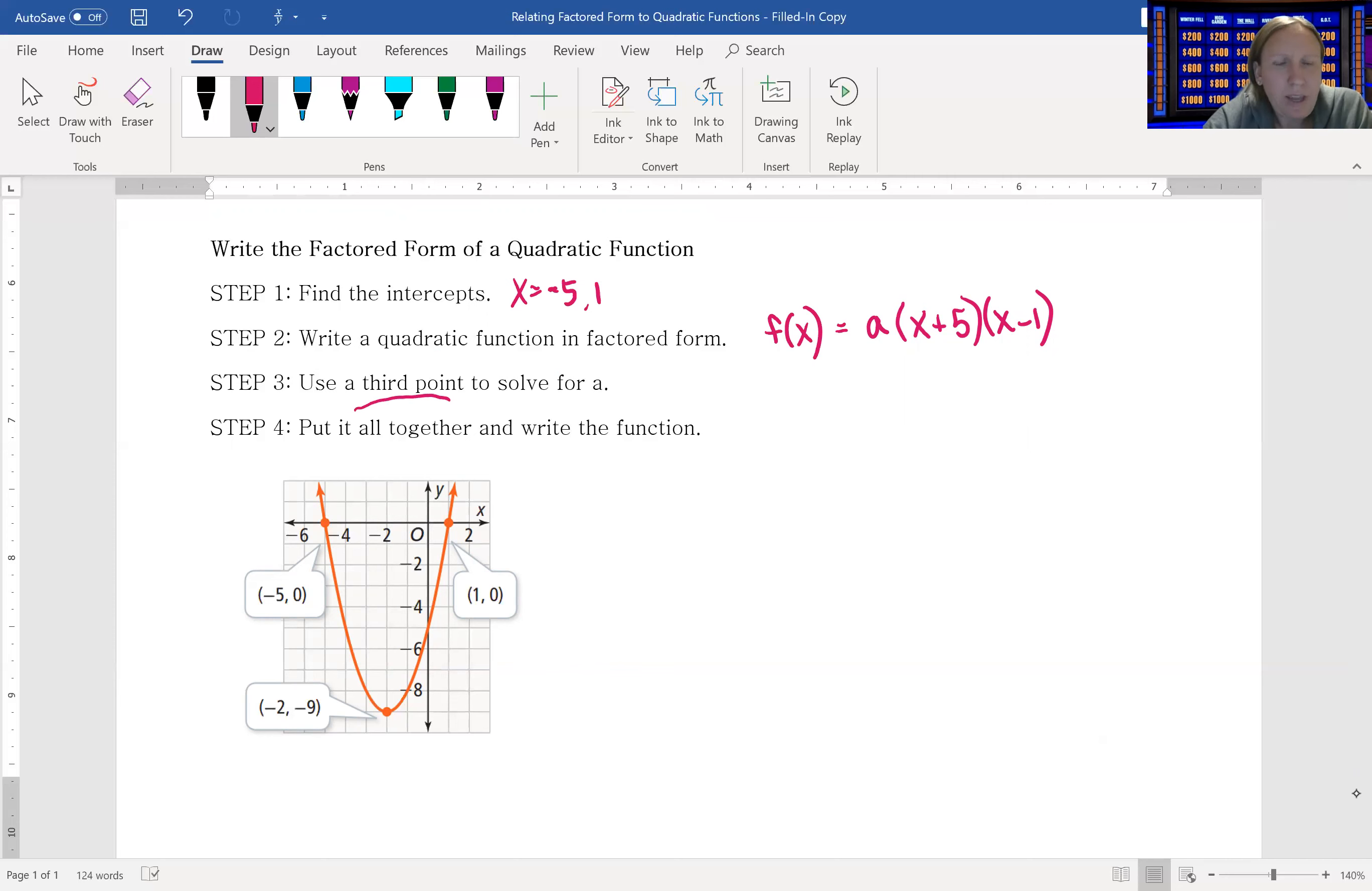Now, in this one, they happen to give us that vertex, but really it could be any point along that parabola. Like there's a nice point right there, it looks like the y-intercept. You could use that reflected point over there. So really, any other point can be used. But because they give us that vertex, let's use that one.